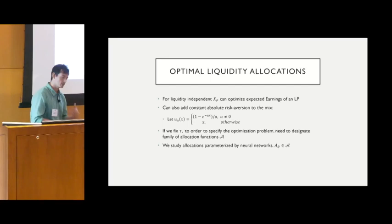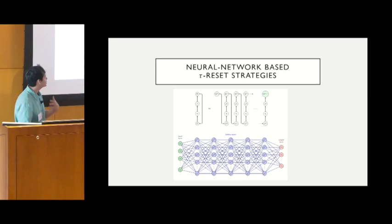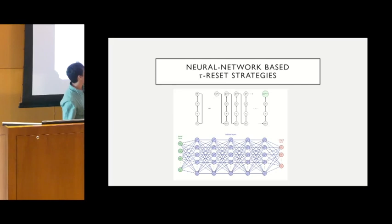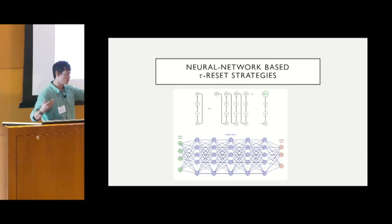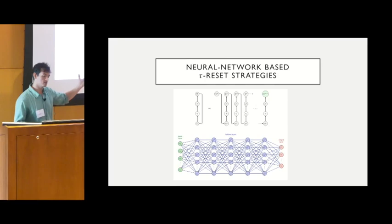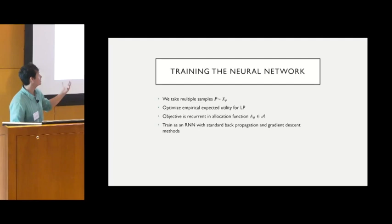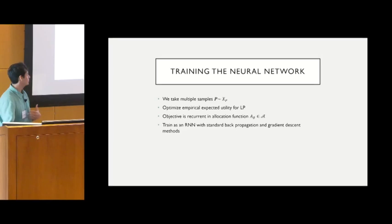A key methodological advance is parameterizing allocation functions by a neural network and exploiting the recurrent structure to optimize. At every time step, the network receives a context C — wealth, current bucket, etc. — runs it through a feedforward neural network to decide the allocation, and this proceeds over time with trigger resets. The recurrence means my neural network affects my wealth in subsequent rounds, which affects my context. Taking multiple samples and optimizing, this has the same structure as a recurrent neural network, so we can use stochastic gradient descent and backpropagation to optimize this family of strategies.